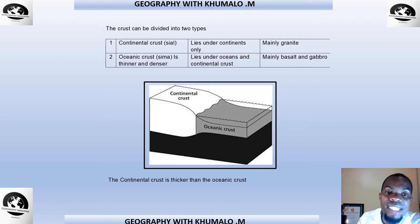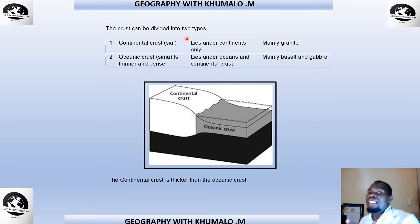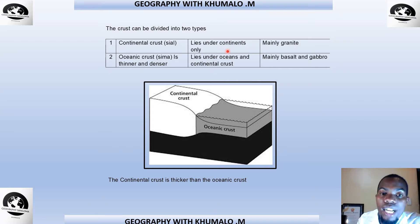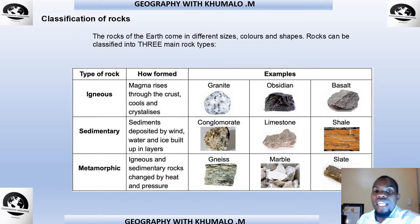The crust can be divided into two types: the continental crust, known as the sial, and the oceanic crust, known as the sima. The continental crust lies under continents only, while the oceanic crust lies under oceans and continents. The continental crust is mainly granite, while the oceanic crust is mainly basalt and gabbro. These distinctions can be asked in your examination.